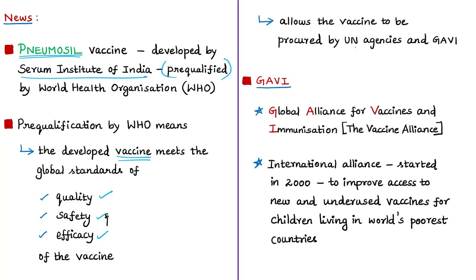GAVI, also called the Vaccine Alliance, is an international organization started in the year 2000. Its goal is to improve access to new and underused vaccines for children living in the world's poorest countries. GAVI takes on the cost burden of ensuring access to vaccines for children in disadvantaged circumstances.